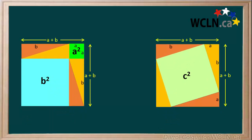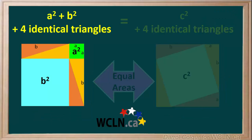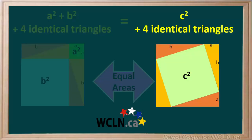We see again that the width and length of both squares is A plus B. And the area of both squares is A plus B in brackets squared. So, these squares have equal areas. And the total area of the left square, which is A squared plus B squared plus four identical triangles, is equal to the total area of the right square, which is C squared plus four identical triangles.